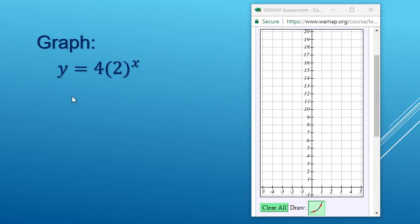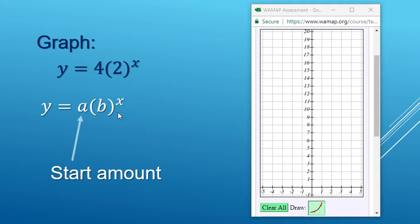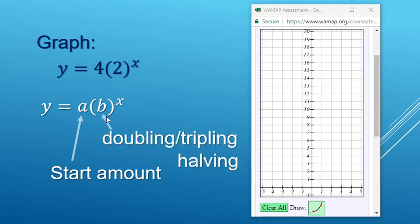All right, so here we're going to graph the exponential function 4 times 2 to the x. This does take the form a times b to the x, where a is the start amount, and then the b, the base, tells us whether it's like a doubling, tripling, or like a halving style graph there.